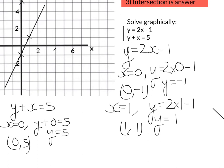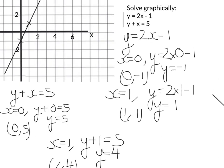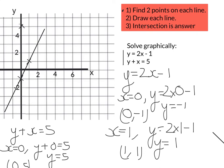Next, we need to find another point. I'm going to use x equals 1. So y plus 1 equals 5, meaning y must be 4. So the other point is (1, 4). Let's put that on the graph at (1, 4).